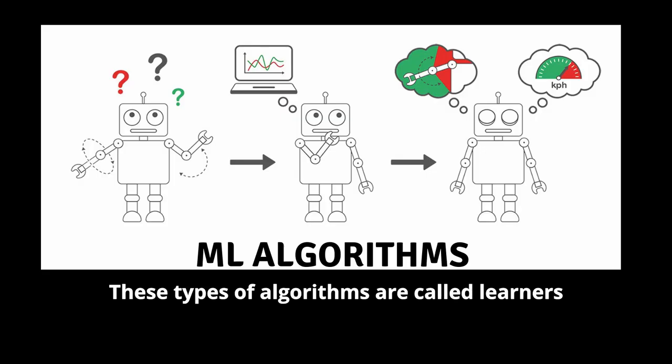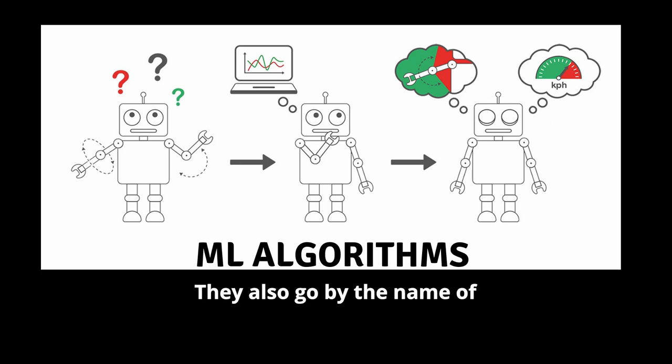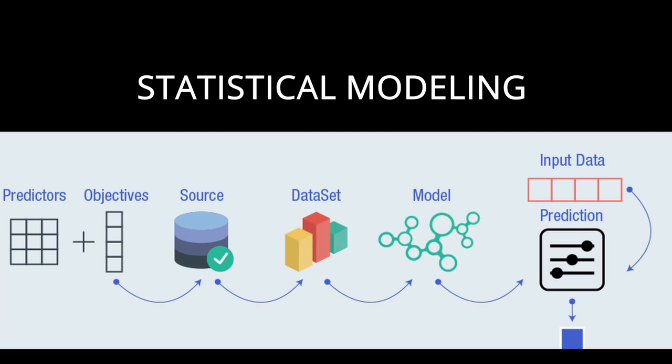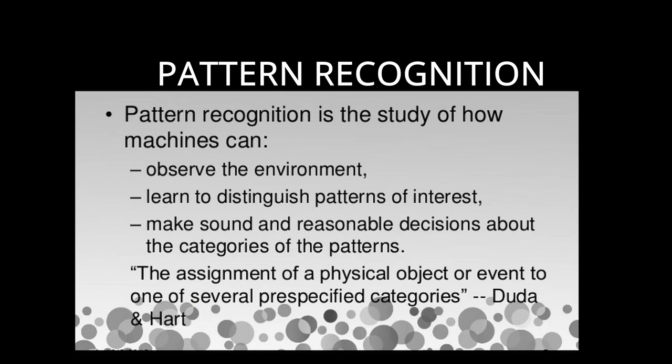These types of algorithms are called learners. They also go by the name of data mining, adaptive systems, statistical modeling, and pattern recognition.